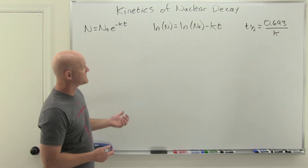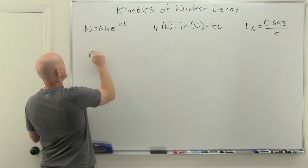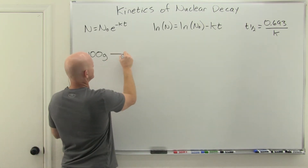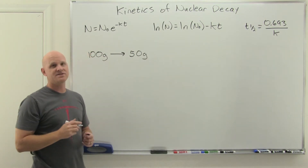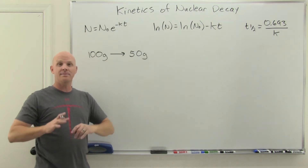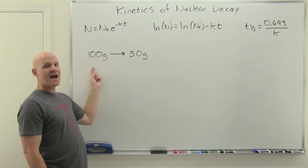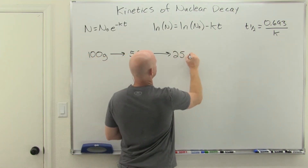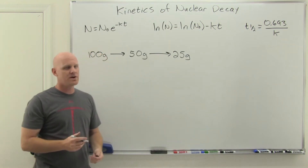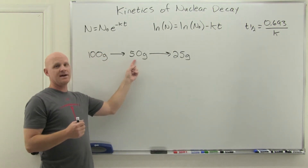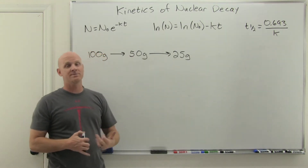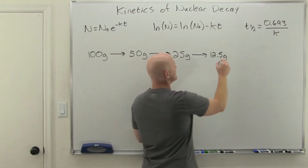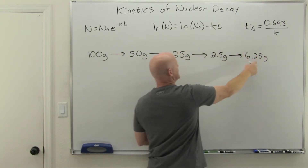Let's say I had 100 grams of a radioactive substance with a half-life of 20 minutes. After 20 minutes, I would only have 50 grams left. After the passage of one half-life, half of it decays. After another half-life — another 20 minutes — it would be down to 25 grams. This is actually slowing down: in the first 20 minutes, 50 grams decayed; in the next 20 minutes, only 25 grams decayed; then only 12.5 grams; and then 6.25 grams, leaving us with 6.25 grams.